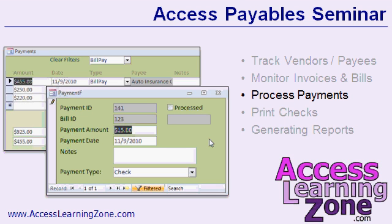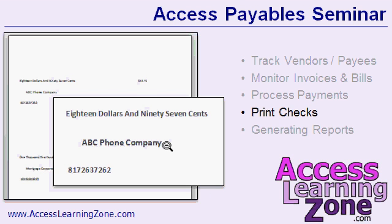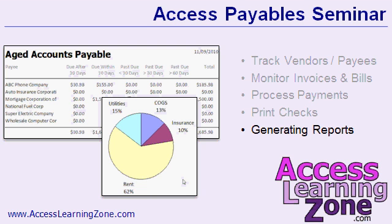Specify different payment methods for each bill, such as checks, online bill pay, or credit card. Print checks right from the database — and yes, we'll use a function to convert numeric dollars and cents to text. And finally, generate various reports such as an aged accounts payable, an expenses by category pie chart, and more.